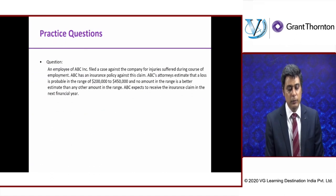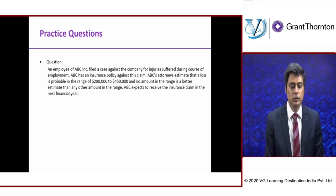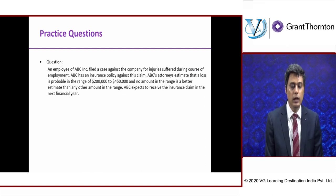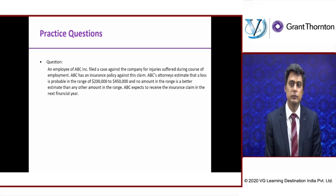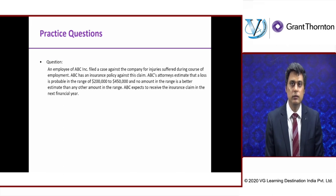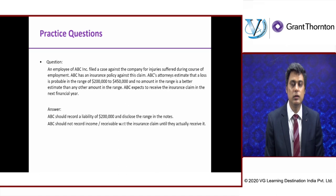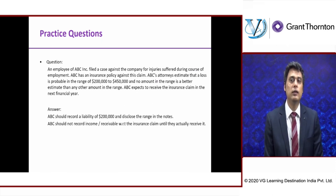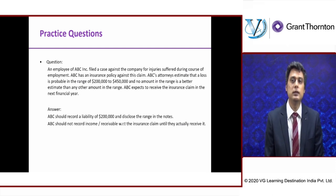Question 4: An employee of ABC Inc. files a case against the company for injuries suffered during the course of employment. ABC has an insurance policy against this claim. ABC's attorneys estimate that a loss is probable in the range of $200,000 to $450,000, with no best estimate within the range. ABC expects to receive the insurance claim in the next financial year. Since it is probable and you have a range, you will record a liability at $200,000 and in the notes give the entire range. You will not record the receivable for the insurance because you have not yet realized it — recording a gain without realizing it would be against the principles of conservatism.